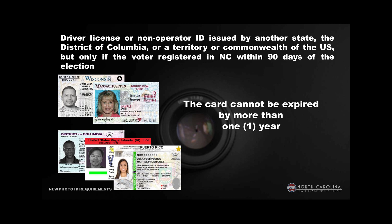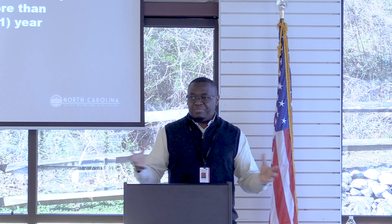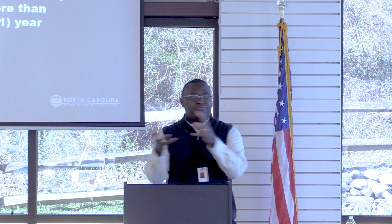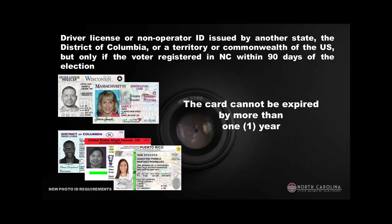For out-of-state people: someone who moves from Virginia to North Carolina and wants to vote can use their out-of-state ID for 90 days. After the 90-day mark, they cannot use it because they're expected to have transferred over. The same one-year expiration requirement applies — if the ID is expired for more than a year, they cannot use it even if it's out-of-state. And if it's expired more than a year, they've likely been here more than 90 days anyway.